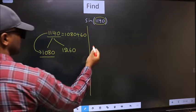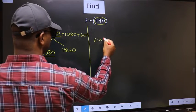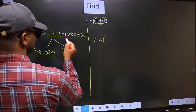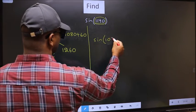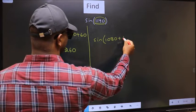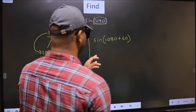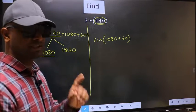So this will become sin. In place of this, now we should write 1080 plus 60. This is your step 1.